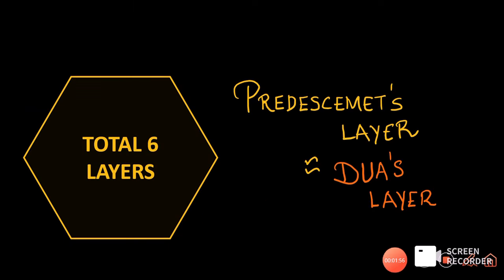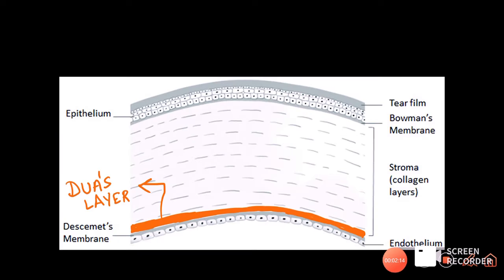Instead of five layers, we actually have six layers in the cornea. The new layer added by the work of Dr. Harminder Dua is the pre-Descemet's layer, also called Dua's layer after its discoverer. Dua's layer is present just anterior to Descemet's membrane — in other words, just posterior to the stroma — and therefore it is also called the pre-Descemet's membrane.